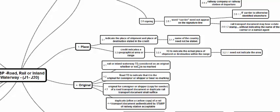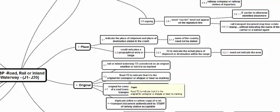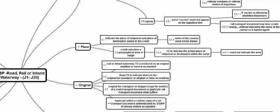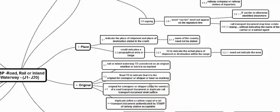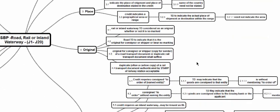What is an original? For rail or inland waterway, the transport document is considered original whether or not it is marked 'original.' For road transport, the original for consignor or shipper, or a document bearing no marking, is acceptable. The original for consignor/shipper copy of a road transport document, or a duplicate rail transport document, shall suffice. A duplicate or carbon copy of a rail transport document authenticated by the stamp of the railway station is also acceptable.